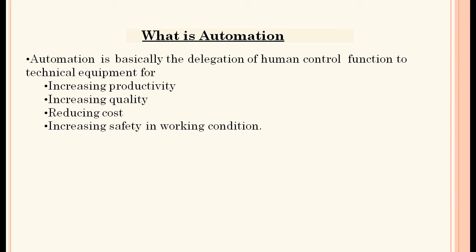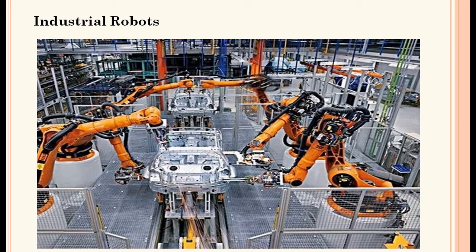So what is automation? Automation is basically the delegation of human control functions to technical equipment for increasing productivity, increasing quality, reducing cost, and increasing safety in working conditions. The application of automation is shown in this picture — industrial robots involved in the assembly line of automobiles performing different functions like welding, spray painting, and windshield fitting with the help of robotic arms, with no human involvement.